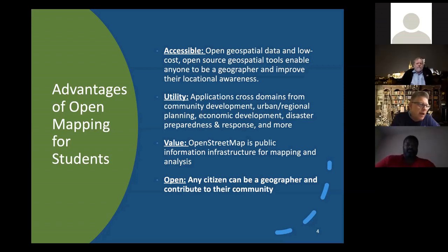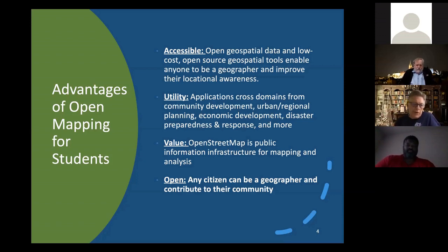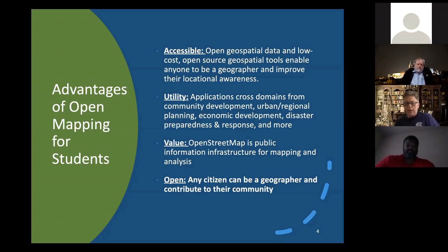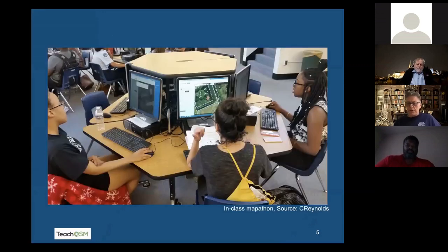It has a great amount of utility, and I think this is a great thing — as mappers we're often focused on the data and practical approaches to mapping, but the utility and downstream utility — I only need to point to the Humanitarian OpenStreetMap organization as an example. The value of OpenStreetMap as a public institution, as a public information infrastructure, often gets overlooked, but that geospatial information is valuable, and with each addition and edit of the map it gets more valuable, and the fact that it's open and that anybody can be a mapper.